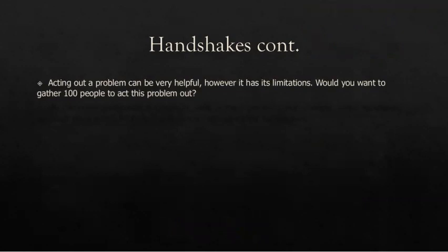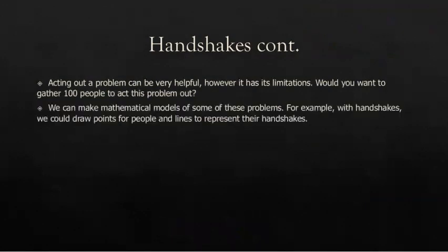Acting out this problem can be helpful. However, it has its limitations. Do you have 30 people that you could gather together? What about if we wanted to gather 100 people to figure out how many handshakes there would be? We can make mathematical models for some of these problems. For example, with the handshakes, we could draw points for people and lines to represent their handshakes. So let's see what that would look like.